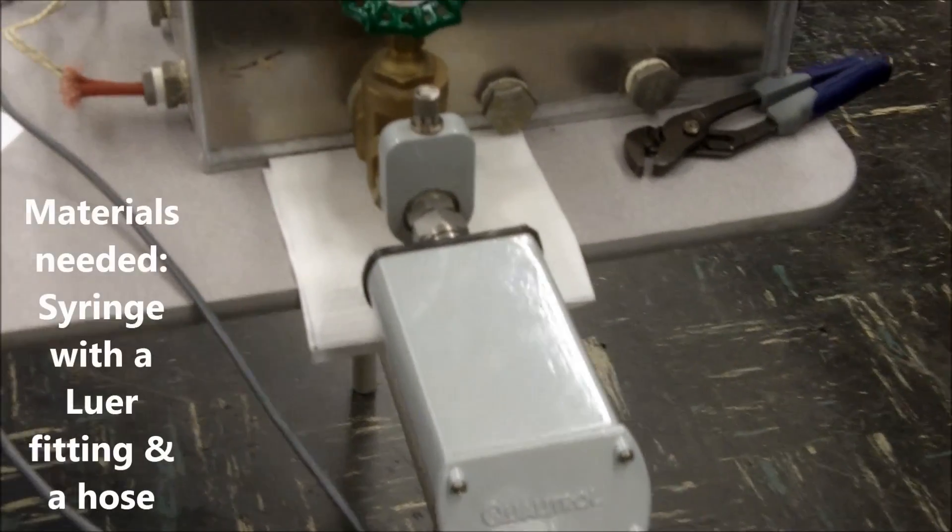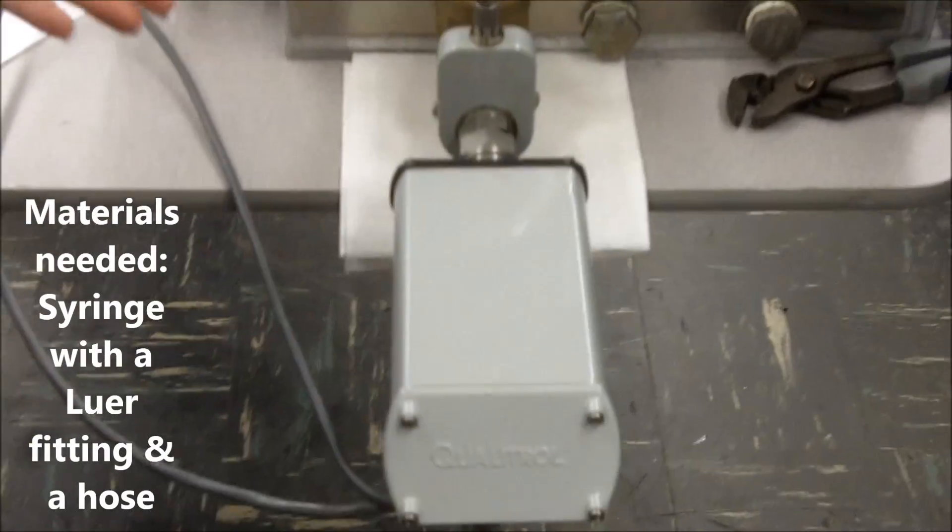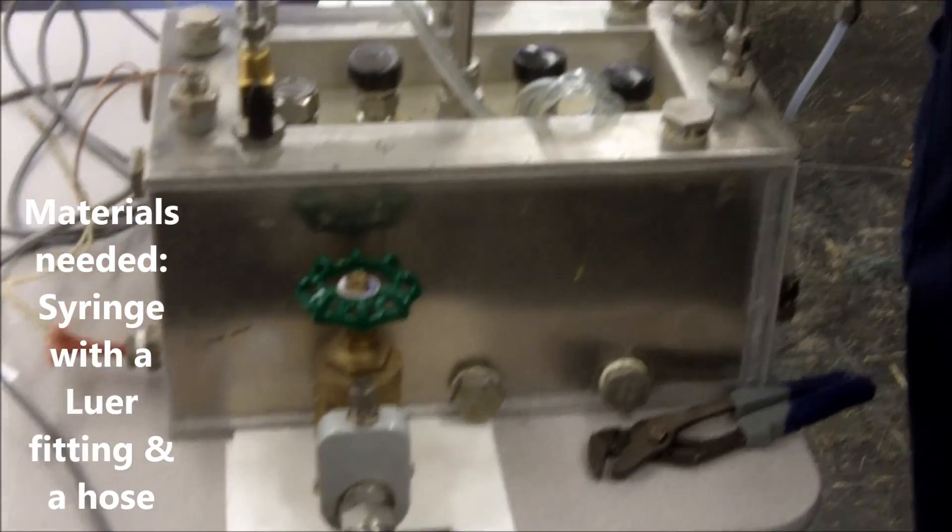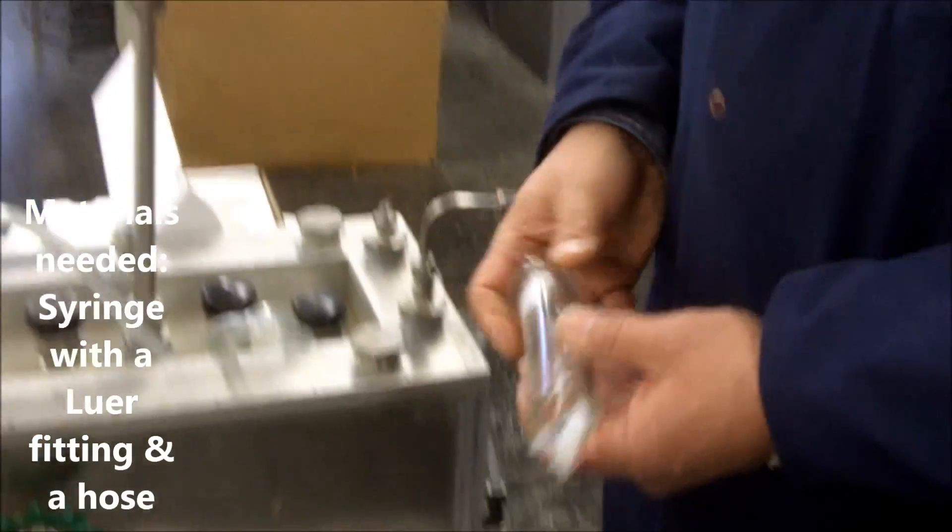The materials necessary for the oil sampling would be a syringe with a lure fitting and a hose if it will not reach because of the valve or some other material in the way.